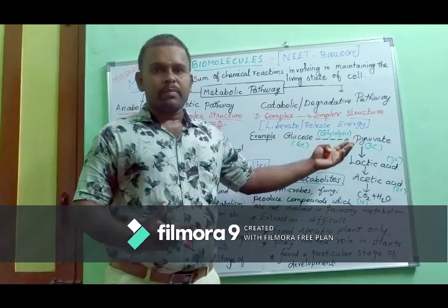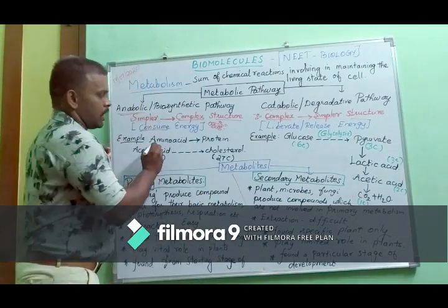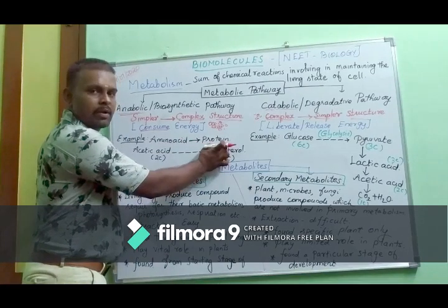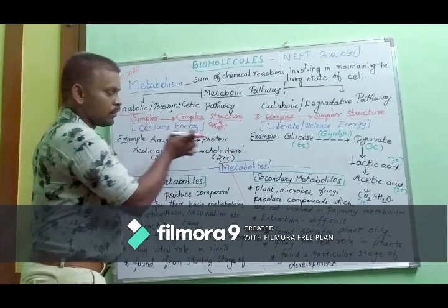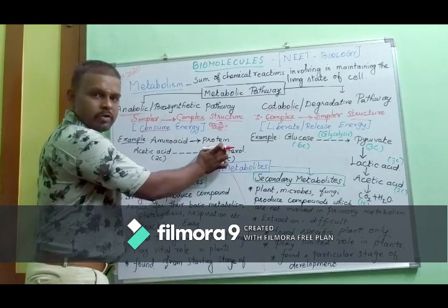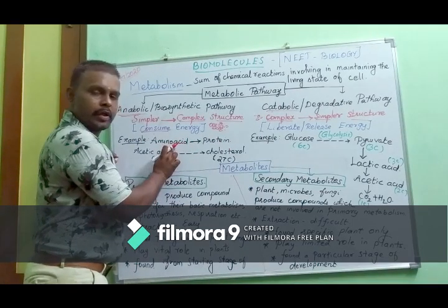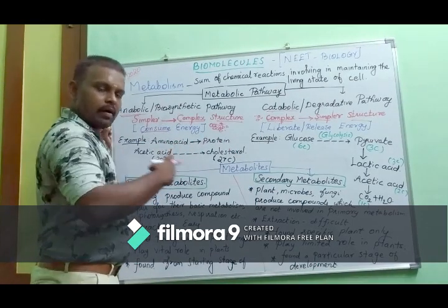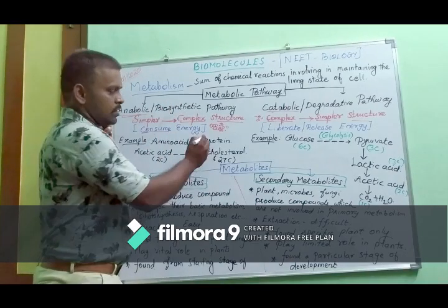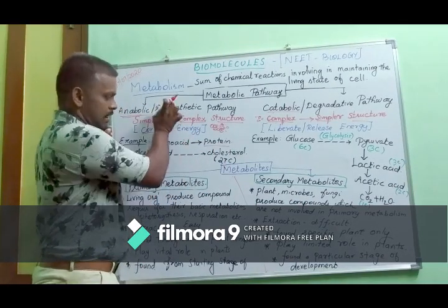Another well-known example involves protein molecules. Small amino acid molecules aggregate and form a protein structure. This is called anabolism.